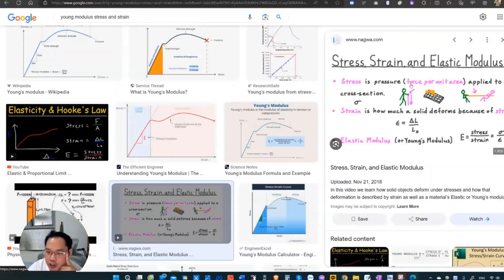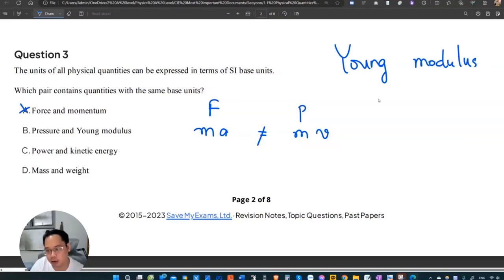Let me write it again. Young modulus. You should revise this definition. Stress is equal to - what is the term for that thing? Young modulus. The letter. Sigma. Sigma is stress over strain. Stress is force over area, very similar to pressure. And strain is the extension over original length, natural length.